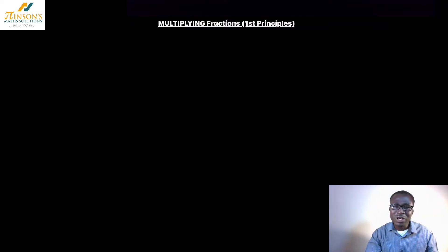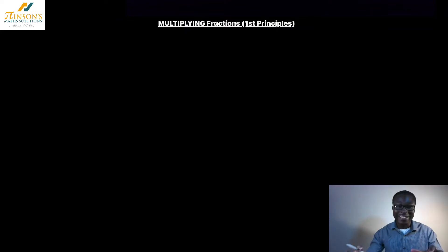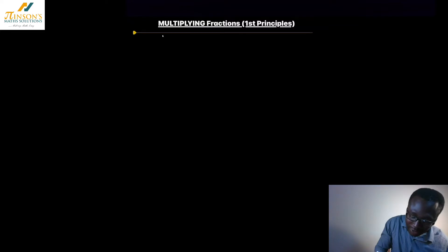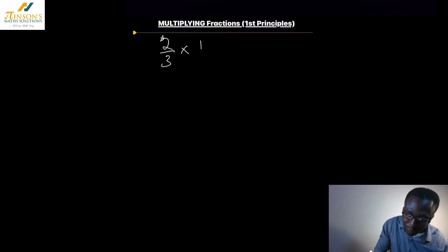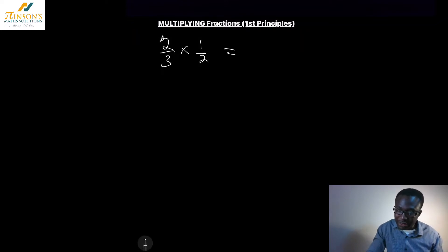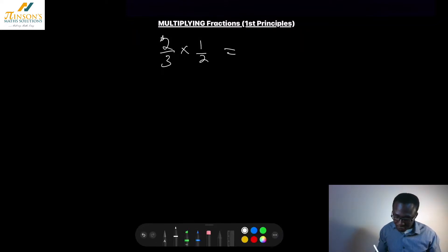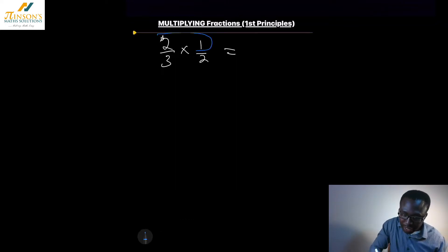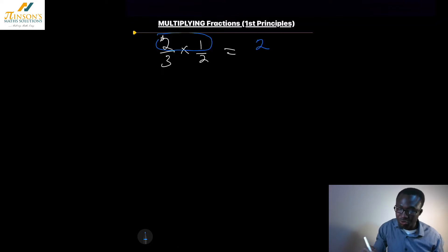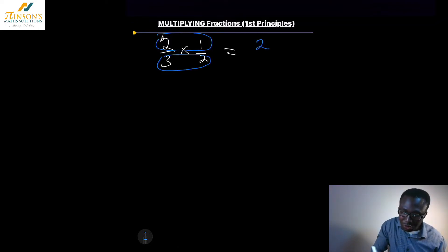Have you ever thought about why we multiply fractions the way we do? Look at this example. Say I want to multiply two thirds by one half. We are told from our math teachers — and that is right — that when we're multiplying fractions, we should multiply across the top, which would be two times one, which is two. And then three times two, which is six.